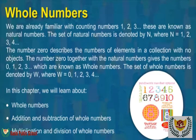The number 0 describes the number of elements in a collection with no objects. The number 0 together with the natural numbers gives the numbers 0, 1, 2, 3, and so on, which are known as whole numbers.